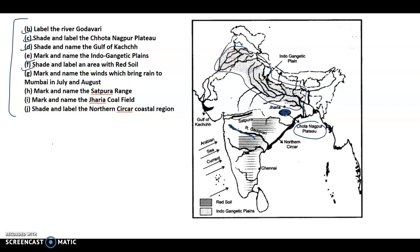Then shade and label an area with red soil — the lines denote red soil, these are the areas. Mark and name the winds which bring rain to Mumbai in July and August — this is the Arabian Sea branch. You can see this is the Arabian Sea, and here is the Bay of Bengal, and here is the Indian Ocean.